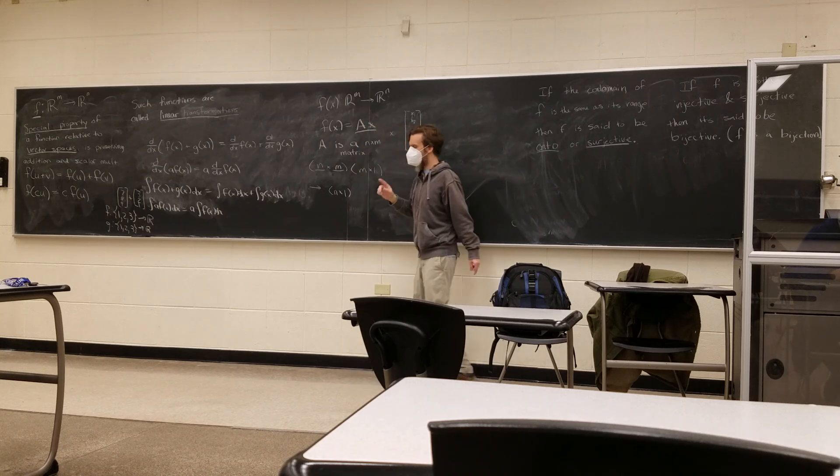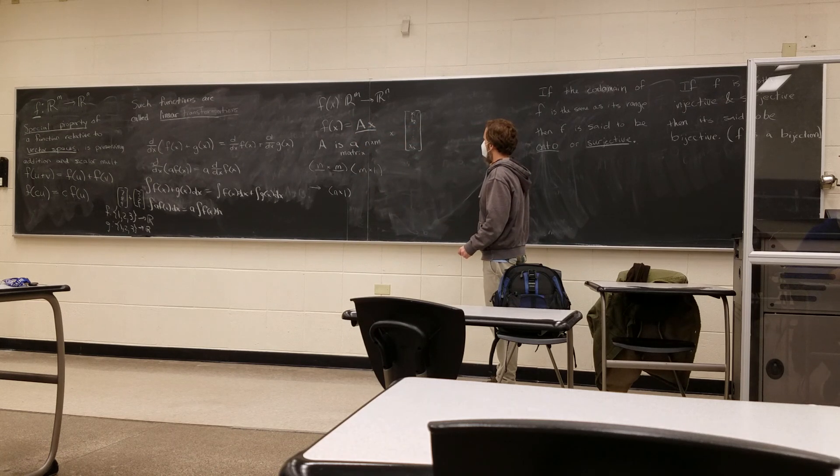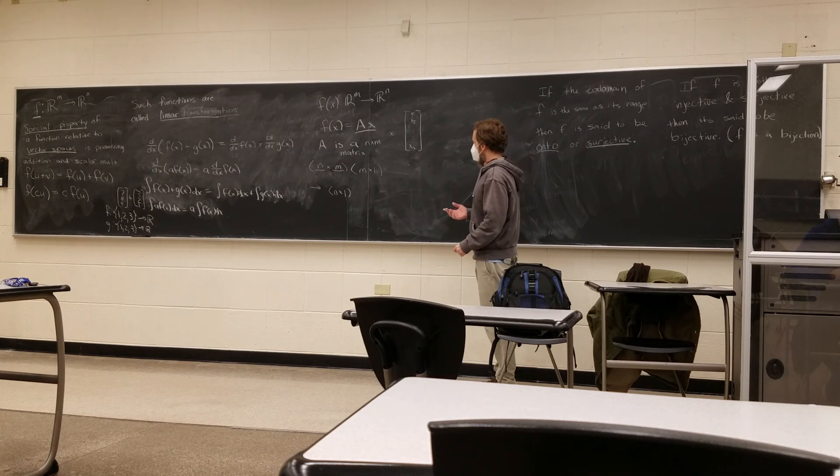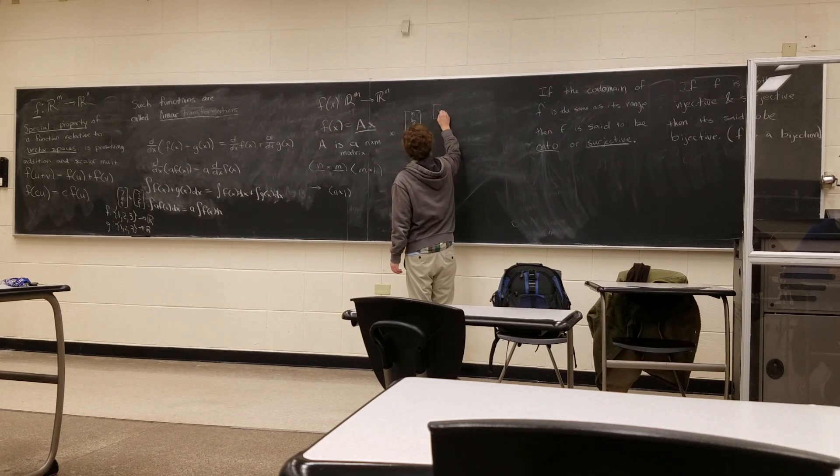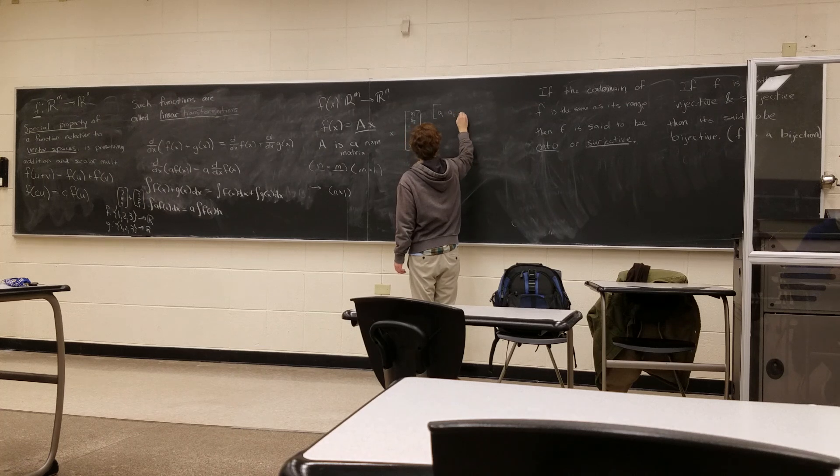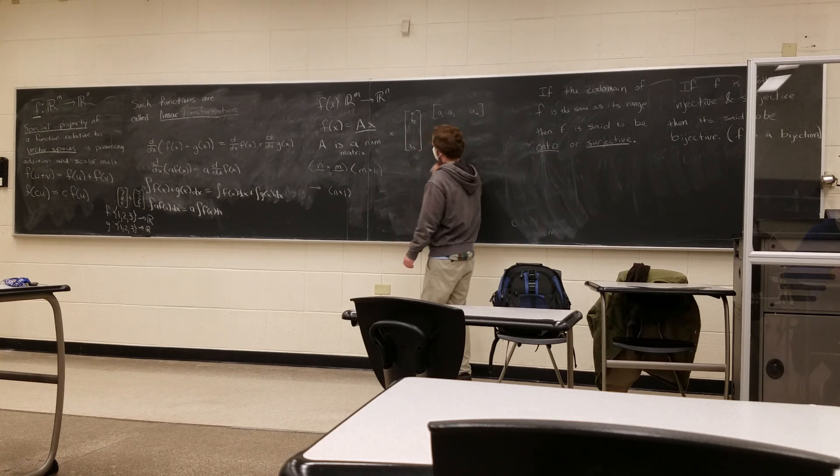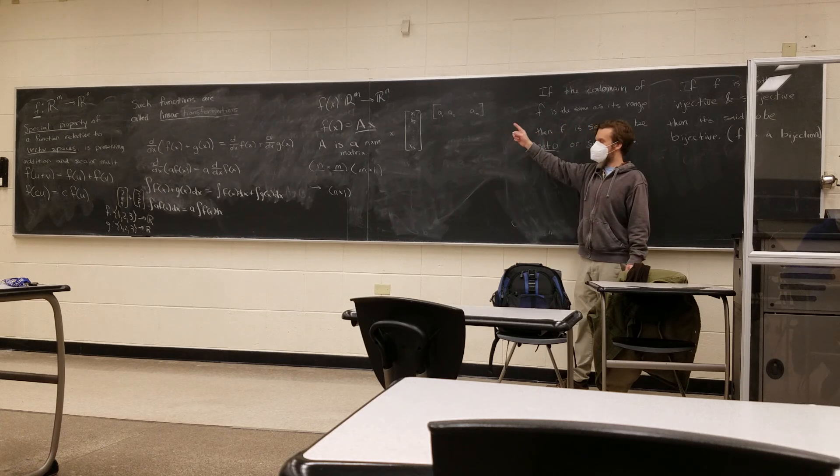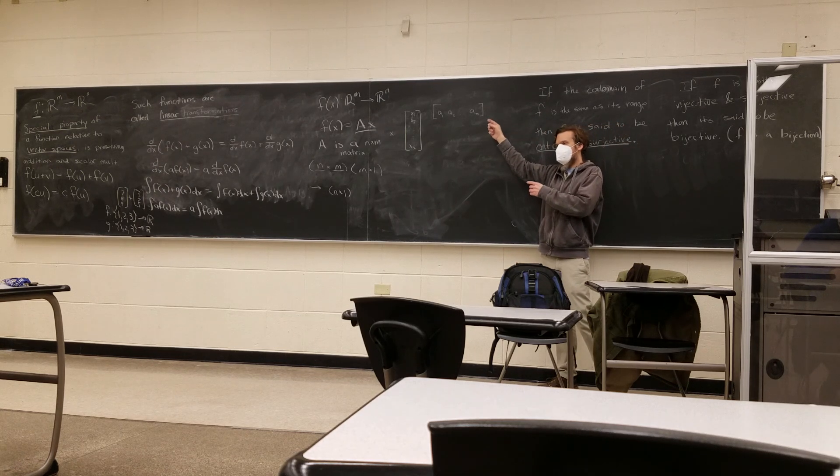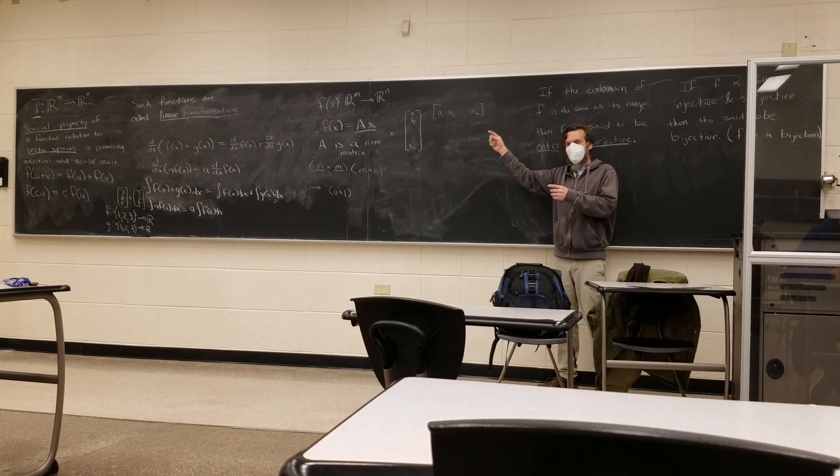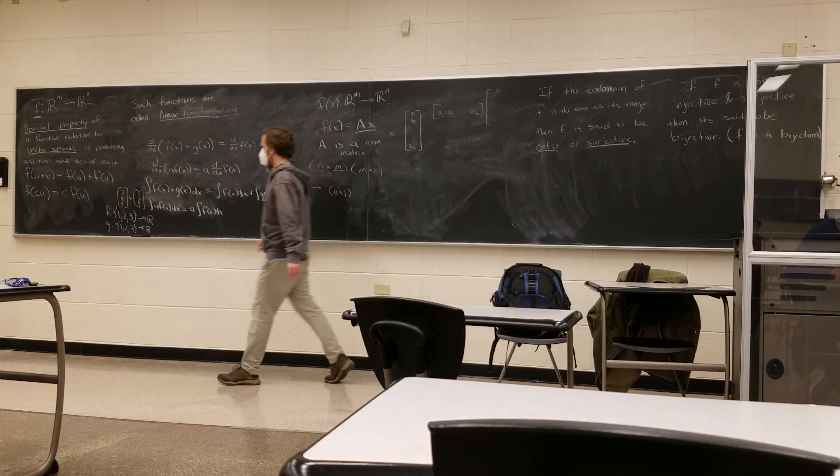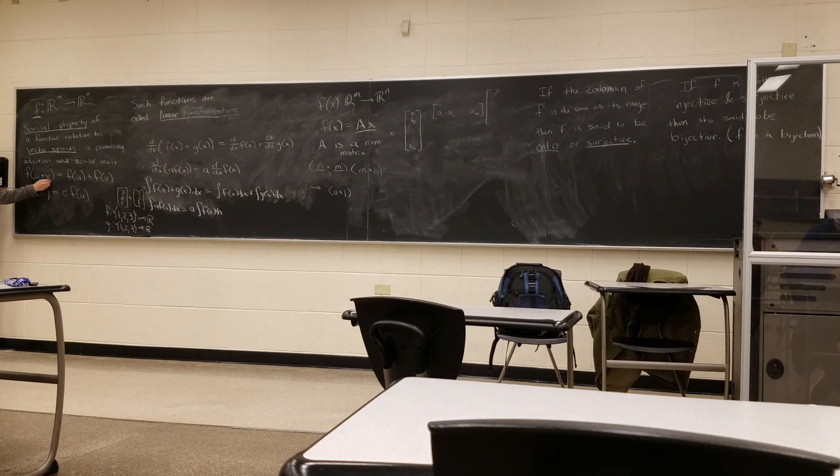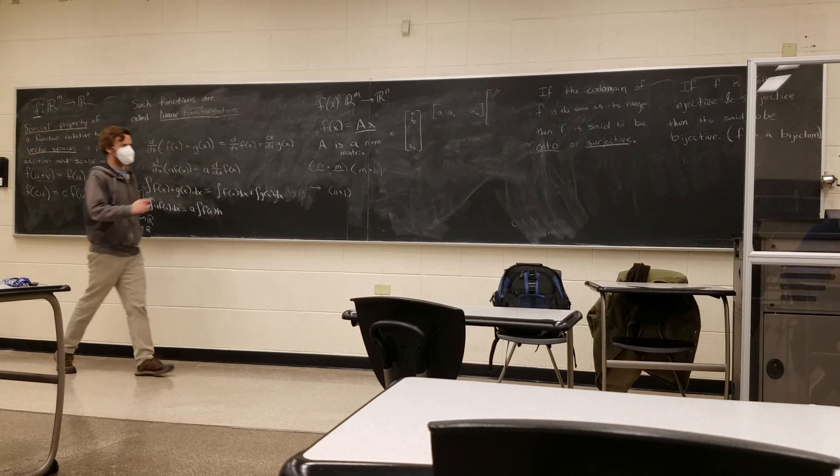So we want to show that this transformation is a linear transformation. So how do we do this? We're used to writing the matrix A like this. So each little a represents a column of the matrix A. And we represent x like this, x1. We're trying to prove that if the input is u plus v, then we'll get as the output f of u plus f of v.